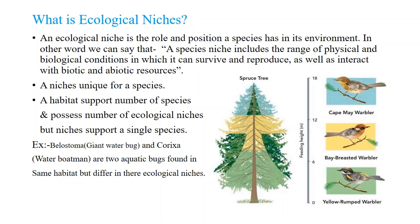A niche supports only a single species. On the right side we can see a picture of a tree representing a habitat. There are three types of warblers — one at the top, one in the middle, and one at the bottom of the tree. These three species survive in the same habitat but occupy different positions, so they have different ecological niches.